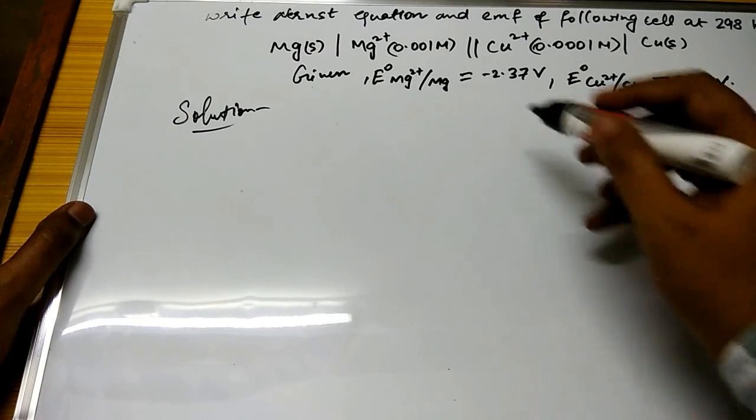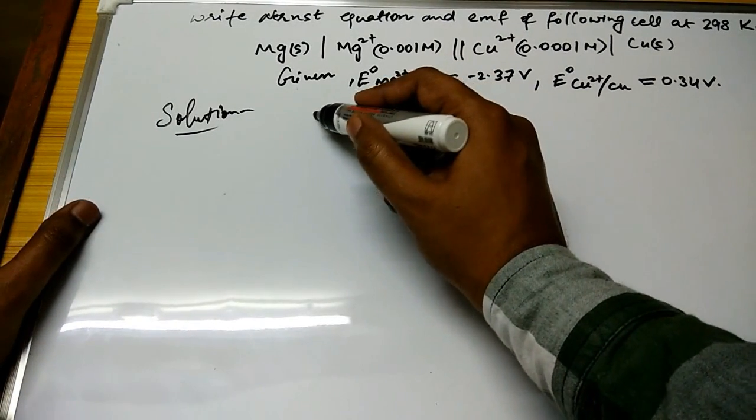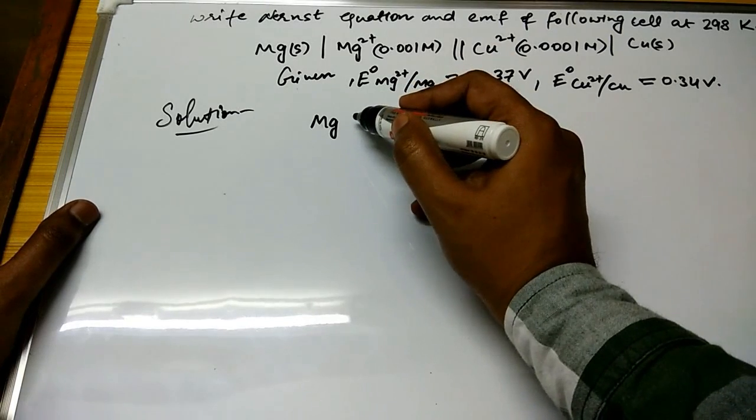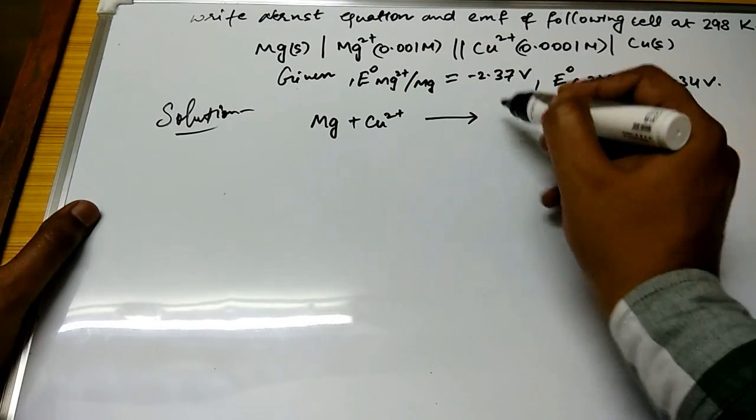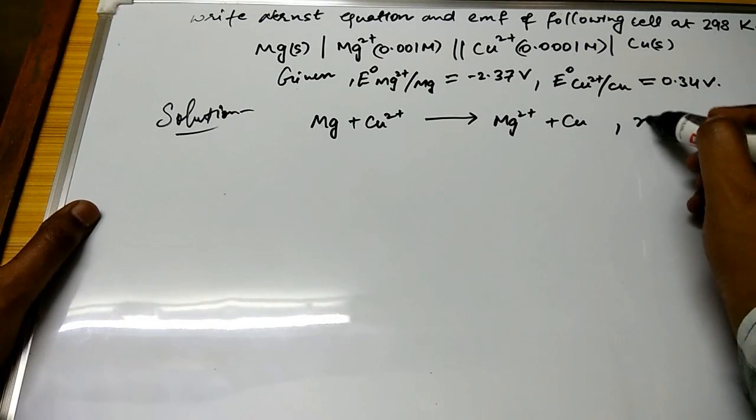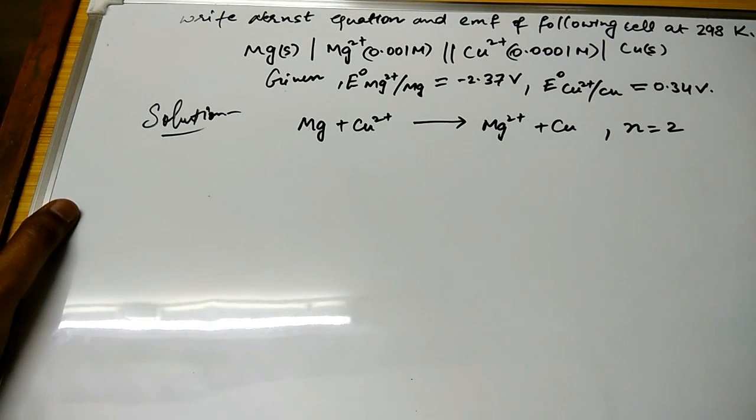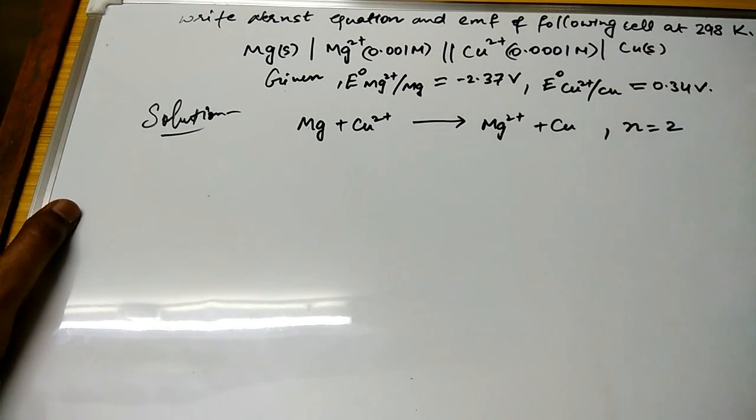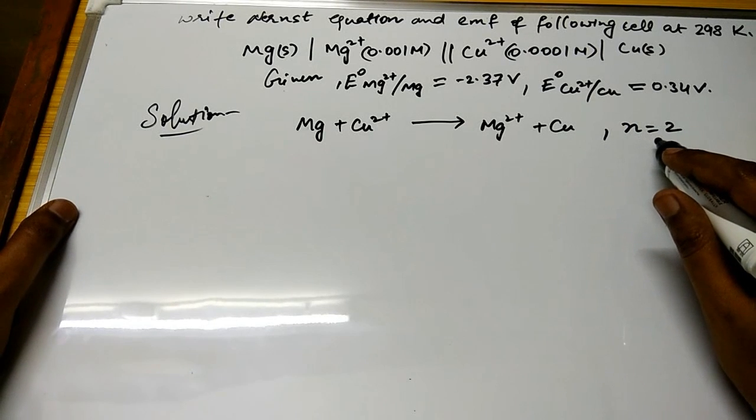Solution: we need to first rearrange this whole cell reaction once again to make it a proper reaction. Mg + Cu²⁺ gives Mg²⁺ + Cu. Note down here, two electrons are participating or transferred from here to here. You can see two positive are there, so n will be taken as 2.